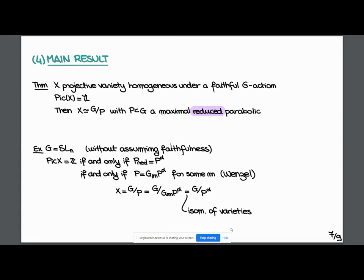I'll give an example to understand how this works in type A. If G is SL_N and we take a quotient of G by a parabolic subgroup without assuming the action is faithful, and we assume the Picard group is isomorphic to Z, this is equivalent to asking that the reduced subgroup is P_alpha for some root, which by Wenzel's theorem is equivalent to saying P is a Frobenius kernel of order some M multiplied by P_alpha. The variety is isomorphic as a variety to G over P_alpha. It's just that the action is twisted by the M power of the Frobenius morphism. This shows why the result is true, at least for SL_N.